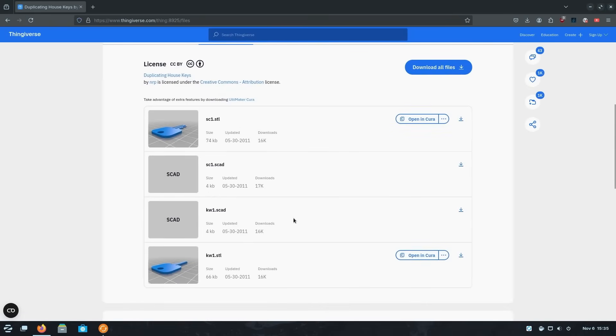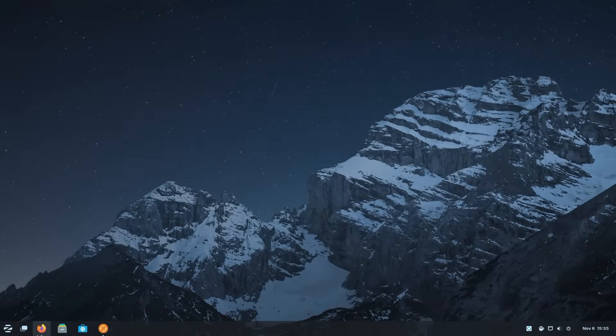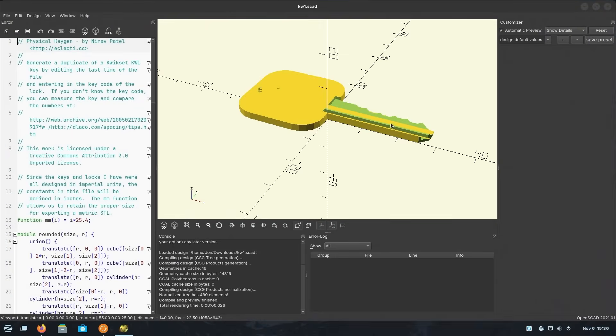So I'll leave a link down in the description below for this, but what you need to do now is actually download the KW1, which is the one we got, and as you can see, I already did download it once, and install a program called OpenSCAD, and OpenSCAD will open that file for you, and it'll look something similar to this.